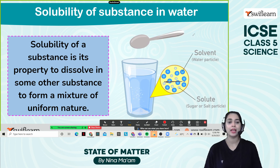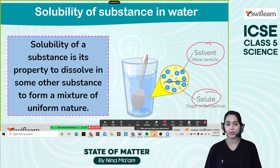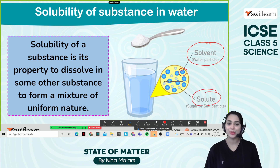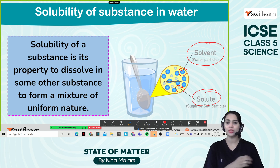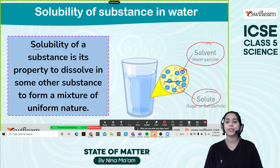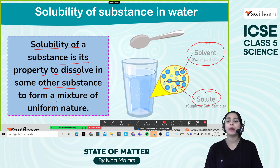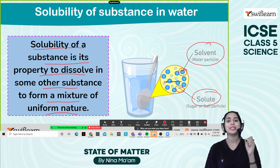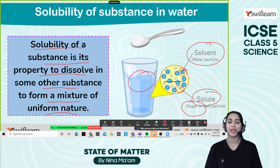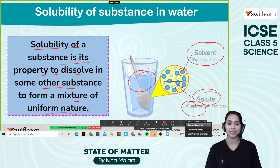Look over here. You can find a solvent and a solute. Solvent means the water, because that is the liquid we are using. You can see the water particles. Solute means the foreign body like sugar or salt which we are trying to dissolve within the solvent. Solubility of a substance is the property to dissolve in some other substance to form a mixture of uniform nature. That is known as the solubility of a substance in water. So water is one substance and sugar or salt is another substance, and we are trying to mix them together to form a mixture of uniform nature.